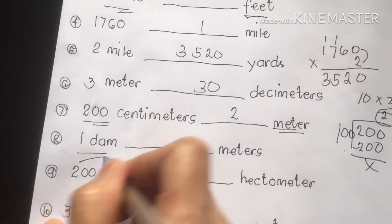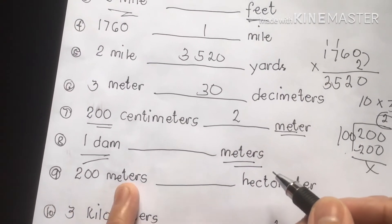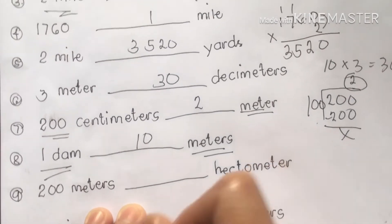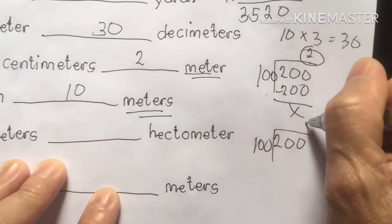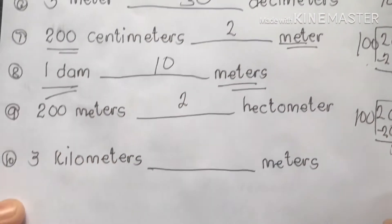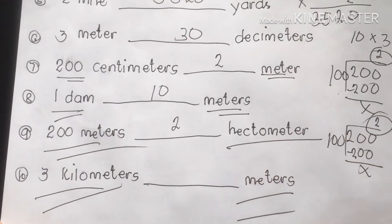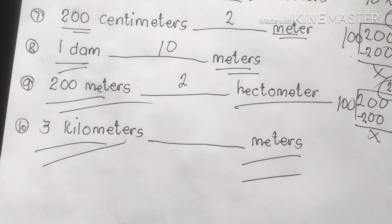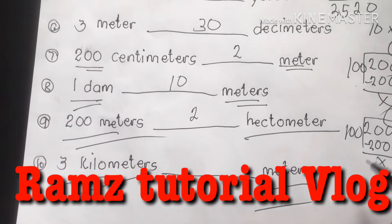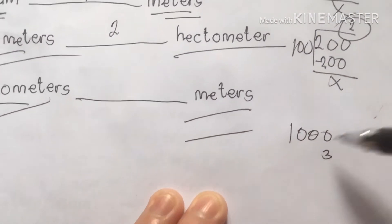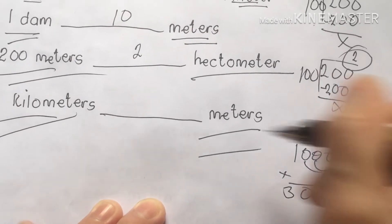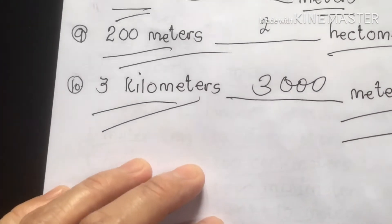Next: 1 dam is equivalent to how many meters? Remember, 1 decameter is equivalent to 10 meters. Next: 200 meters equivalent to how many hectometers? We are going to divide 200 by 100. Our answer is 2 hectometers. For last: 3 kilometers, how many meters? We are going to multiply it by 1,000 because 1 kilometer equals 1,000 meters. 1,000 times 3 equals 3,000 meters.